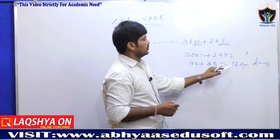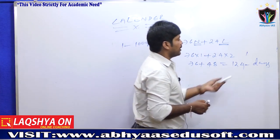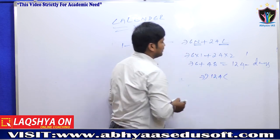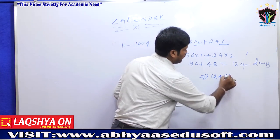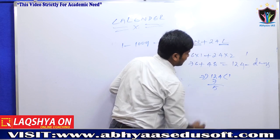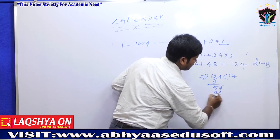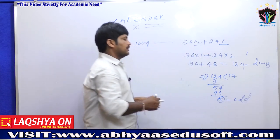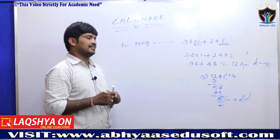Now, 124 odd days need to be reduced by dividing by 7. When we divide 124 by 7, we get 7×17 = 119, and the remainder is 5. So every 100 years consists of 5 odd days.